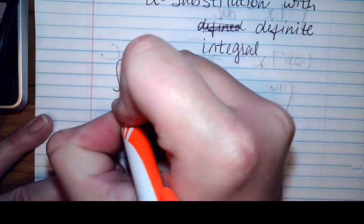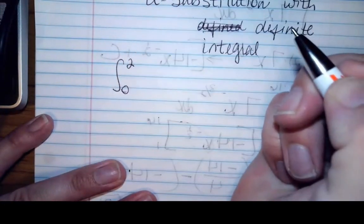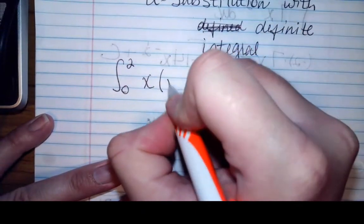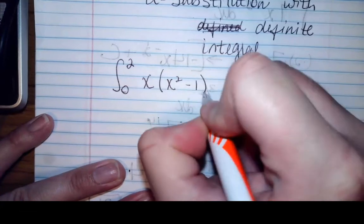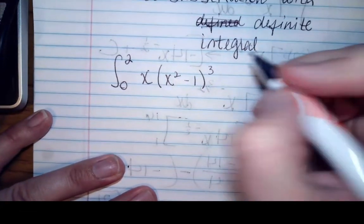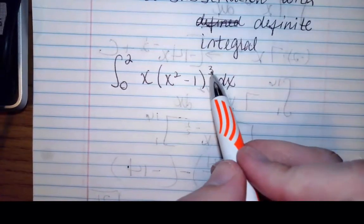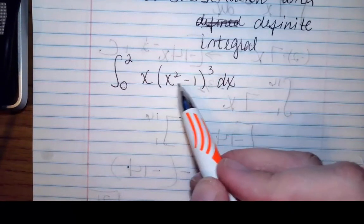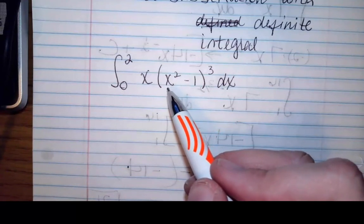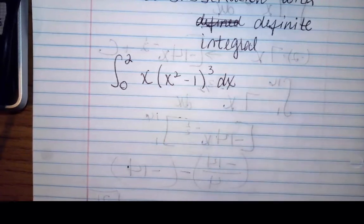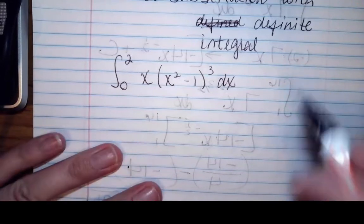So I have the integral from 0 to 2 of x times x-squared minus 1 to the third power dx. I could expand this out — x-squared minus 1 times itself three times — and distribute the x through and then integrate, but that's a nasty mess.